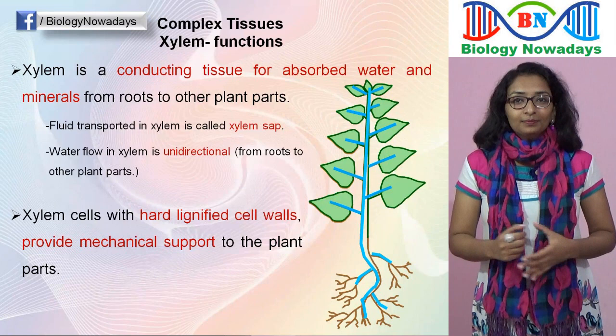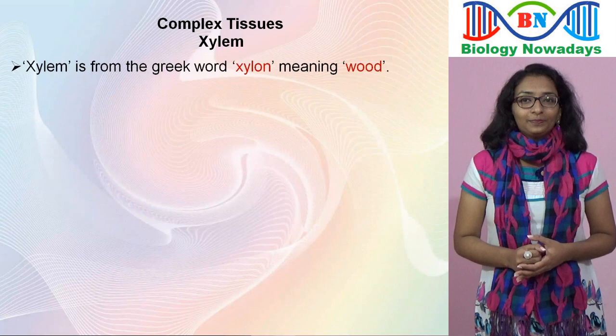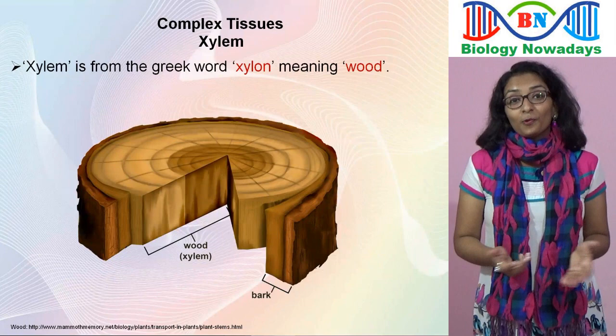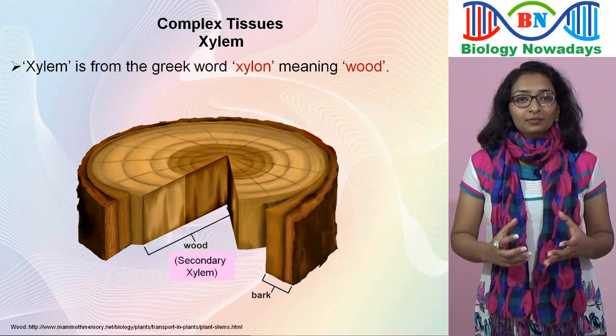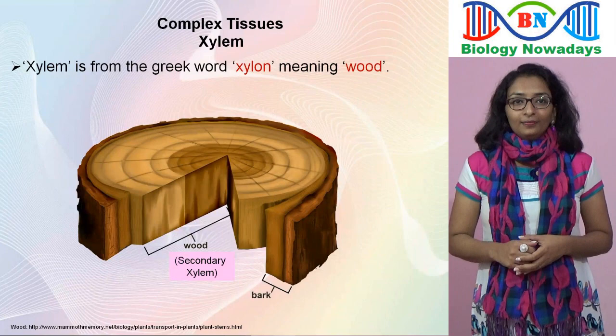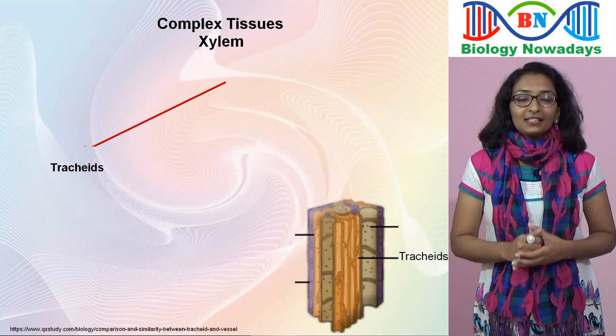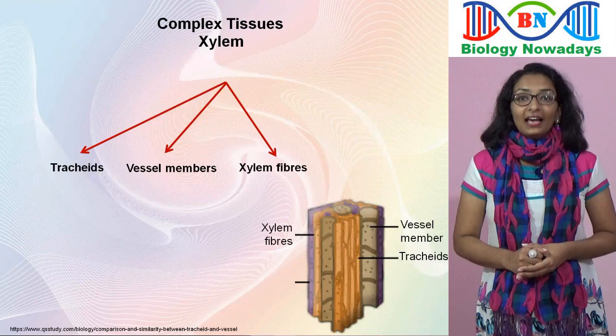The word xylem is derived from the Greek word xylon meaning wood. In trees, what we call as wood is actually the xylem, or more correctly, secondary xylem. Secondary xylem is the xylem produced during secondary growth or thickening in gymnosperms and dicot plants. Xylem tissue is composed of four types of cells — tracheids, vessel members, xylem fibres or wood fibres, and xylem parenchyma.